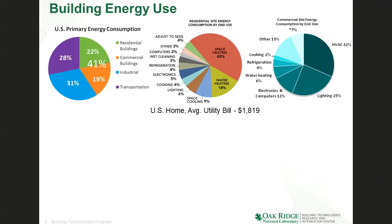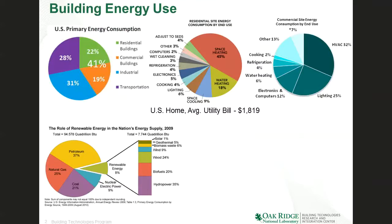One of the challenges we have in making our U.S. building stock more energy efficient is that the average homeowner only spends about $1,800 a year. So anything that we do to save energy can only save some fraction of that amount, and it usually has to pay itself off in the six to seven years a person typically owns a home for it to be cost effective. In the commercial space, we have a little bit more advantage because commercial buildings are typically larger and use more energy, so there are things that are more cost effective for commercial buildings.